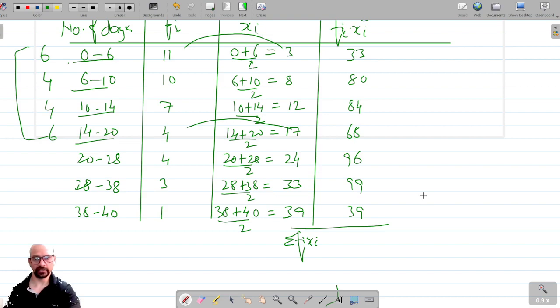So if I add them, this is 3 plus 4 is 7, 8 is 15, and 6 is 21, and 9 is 30, and 9 is 39, so 3. And 3 is 6, 8 is 14, 8 is 22, 6 is 28, 9 is 37, and 9 is 46, and 3 is 49. So this is 499.